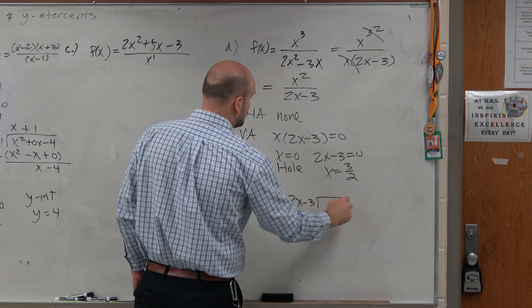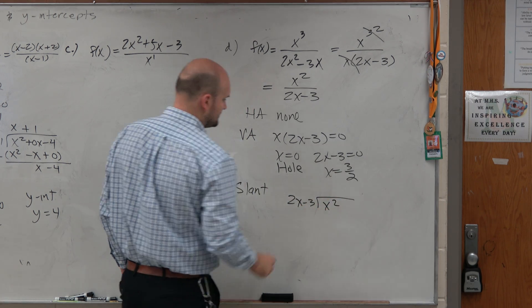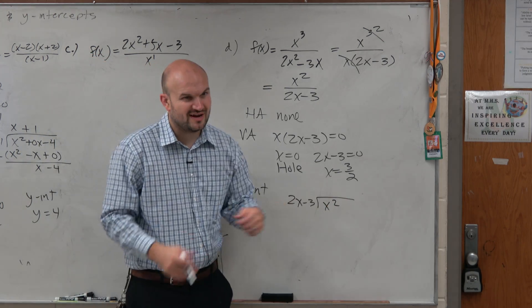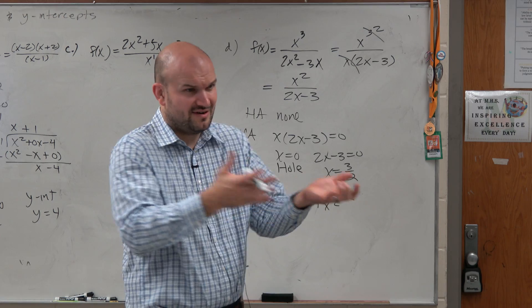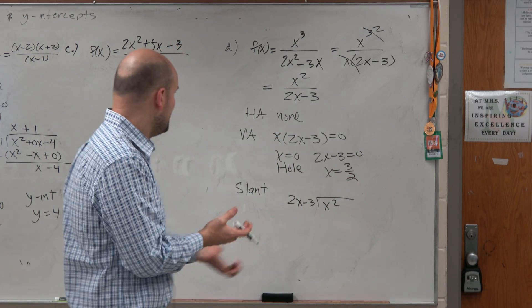2x minus 3 divides into x squared. How many times does 2x divide into x squared? Now, a lot of times, students will get confused. They're like, well, I get x divides into x squared like x times, but I don't get that.